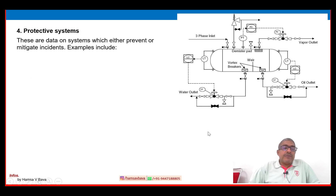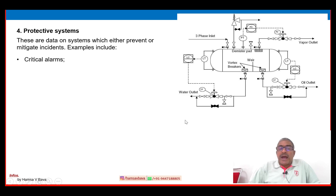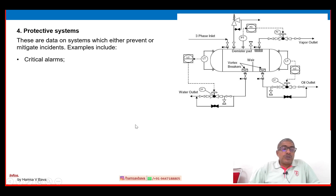Number four: protective systems. These are data on systems which either prevent or mitigate incidents. Examples include critical alarms — such as level alarm, pressure alarm, flow alarm, temperature alarm, and any other alarms required — as well as critical interlocks.